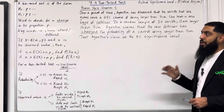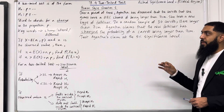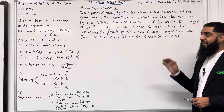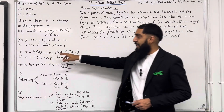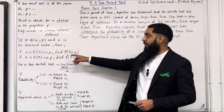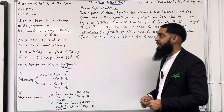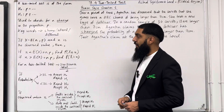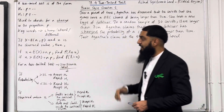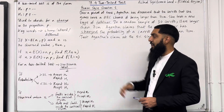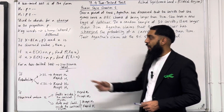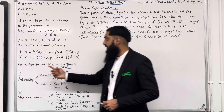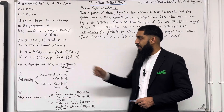If capital X takes on a binomial distribution with fixed number of trials N and fixed probability P, and lowercase x is the observed value, then if lowercase x is less than the expected value NP, we must find P(X ≤ x). If lowercase x is greater than NP, then we work out P(X ≥ x). Less than corresponds to less than or equal to, and greater than corresponds to greater than or equal to.